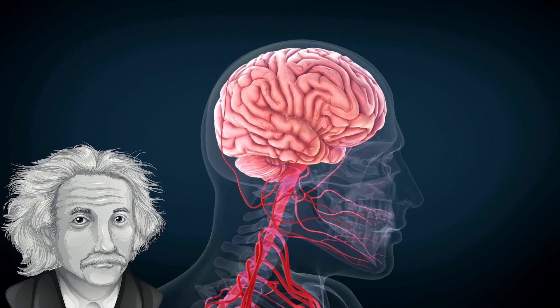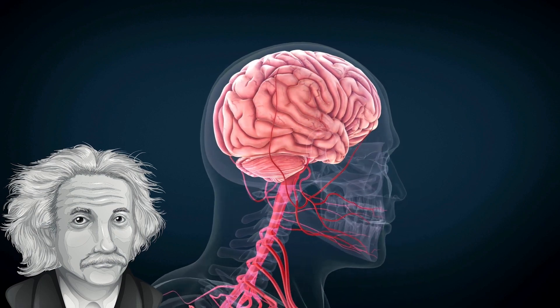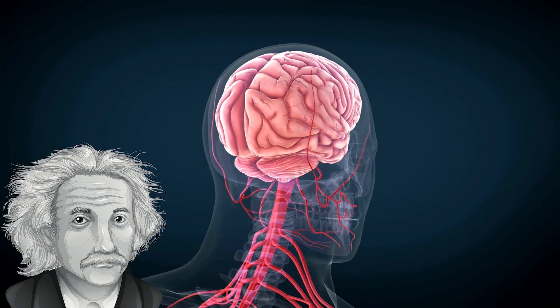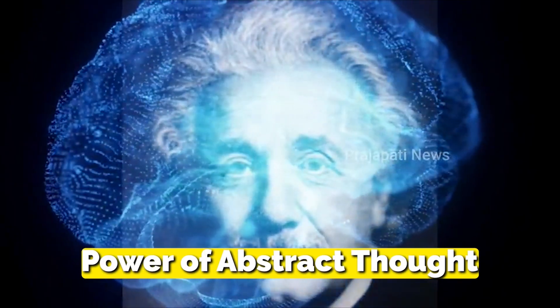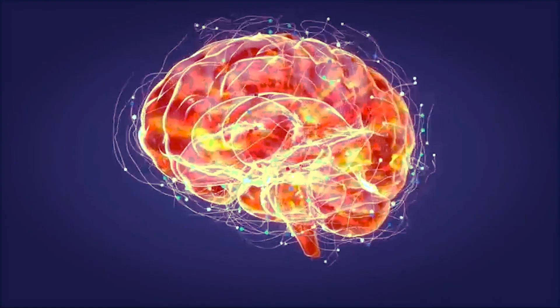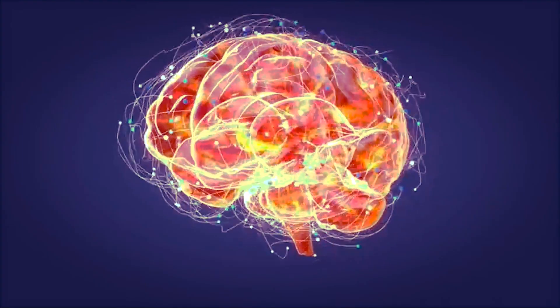As we reflect on the story of Einstein's brain, we are reminded that genius knows no bounds. It can emerge from unexpected places and manifest itself in extraordinary ways. Einstein's brain was a testament to the power of abstract thought, a reminder that the human mind is capable of transcending the limits of ordinary thinking.